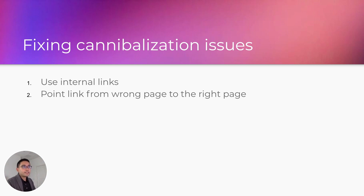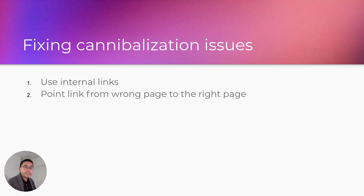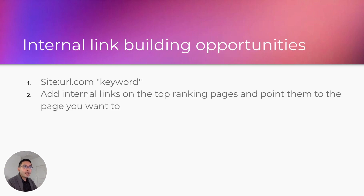You can also use internal links to fix cannibalization issues. For example, I was working on a site that ranks for 'personal injury lawyer Los Angeles,' but I noticed a completely unrelated page on the same site was also ranking for that keyword. What I did was add an internal link with the anchor 'personal injury lawyer Los Angeles' pointing to the correct page — pointing from the wrong page to the right page to tell Google which page should rank for that keyword.